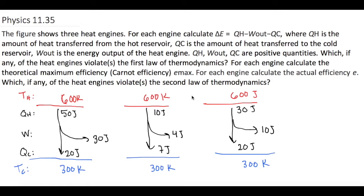The figure shows three heat engines. For each engine, calculate delta E, and that's QH minus work out minus QC. Where QH is the amount of heat transferred from the hot reservoir, QC is the amount of heat transferred to the cold reservoir, and work out is the energy output of the heat engine.